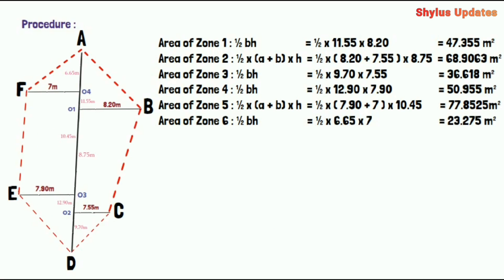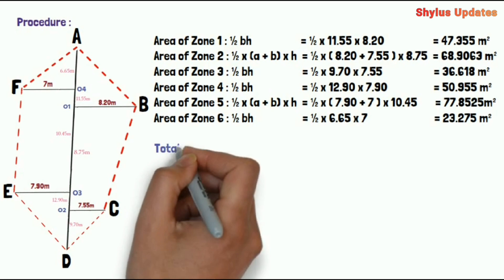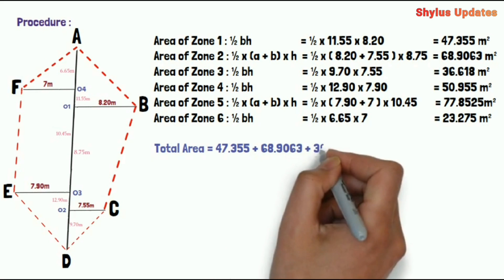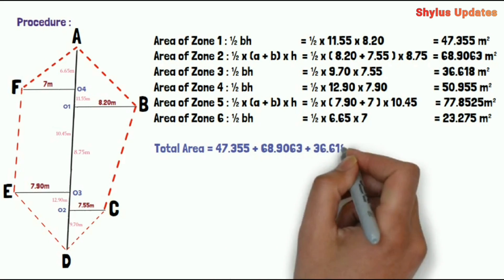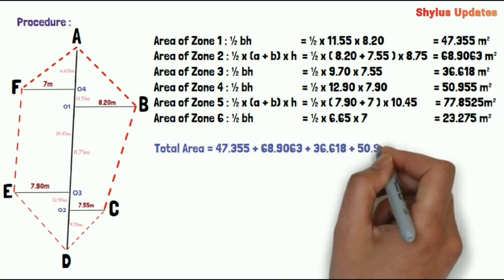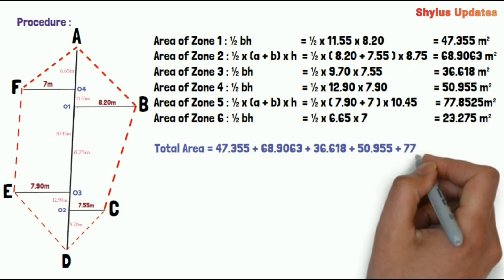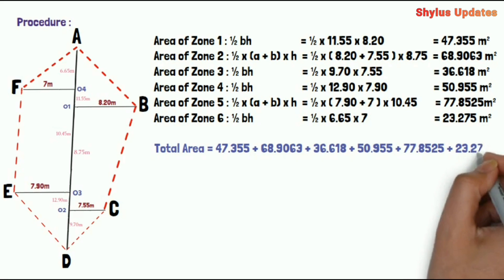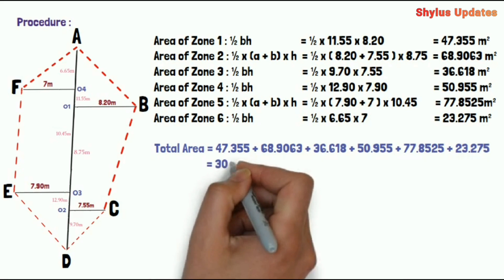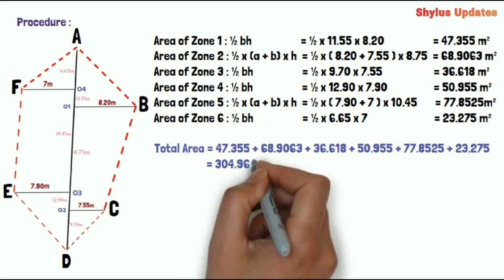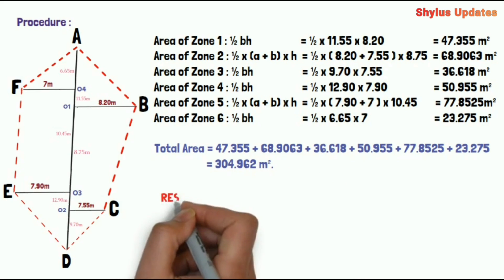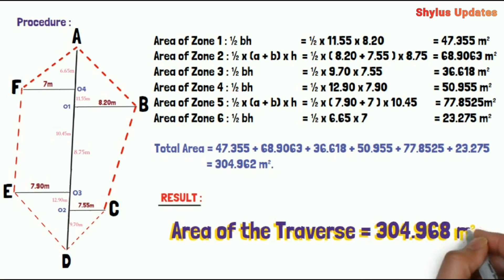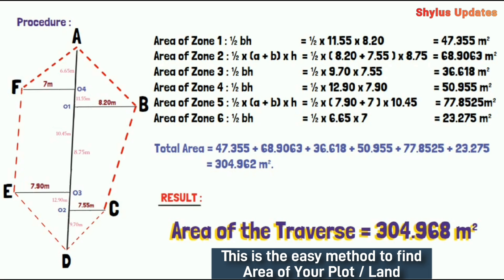Now add all these areas and you get the total area. Total area equals 47.355 + 68.9063 + 36.618 + 50.955 + 77.8525 + 23.275. When you add this, you get the total land area as 304.962 meter square. And finally, the result: Area of the traverse is 304.968 meter square. This is the easy method to find the area of plot.